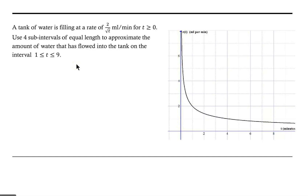Welcome. Let's take a look at an example where we have a tank of water that's filling at a rate of 2 over square root of t milliliters per minute, for t greater than or equal to 0. Use four subintervals of equal length to approximate the amount of water that has flowed into the tank on the interval from 1 to 9.